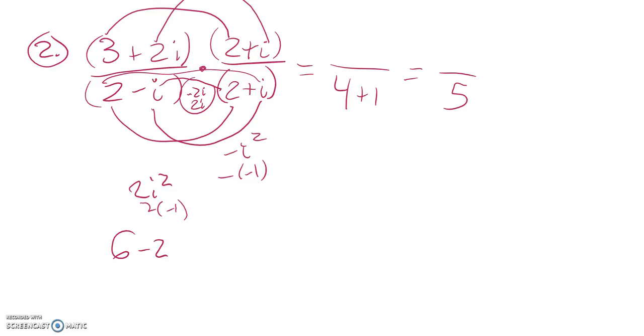Then I have, let's see, what have I not done yet? I have not done 3 times i, which is 3i. I also have not done 2i times 2, which is 4i.